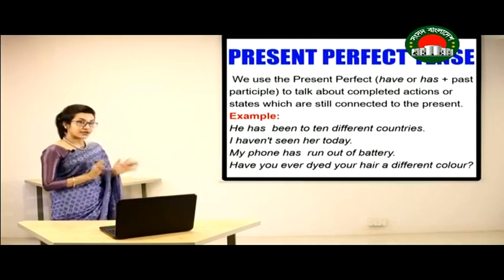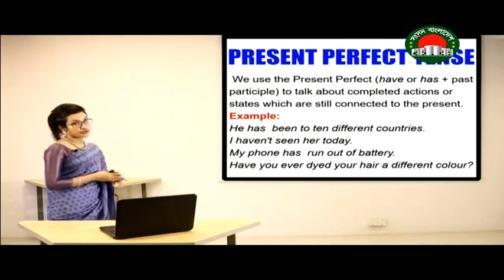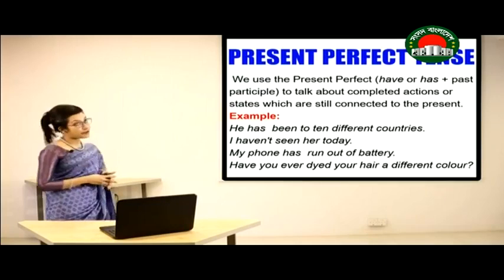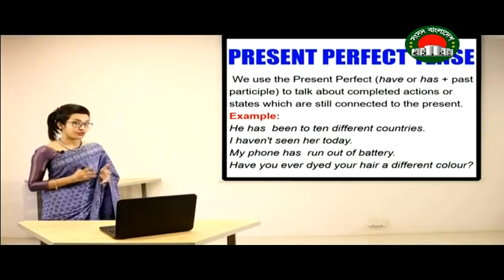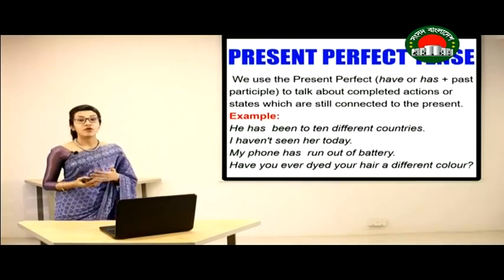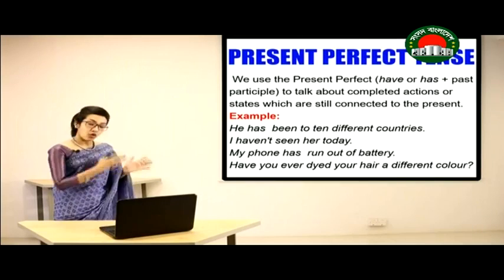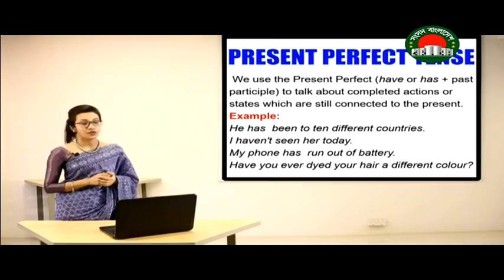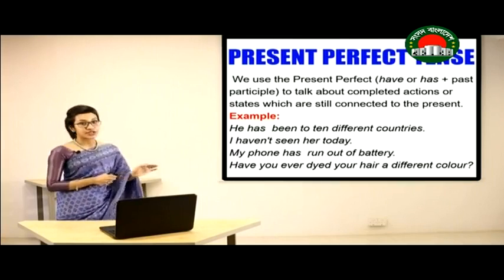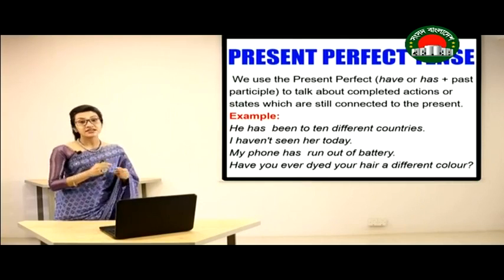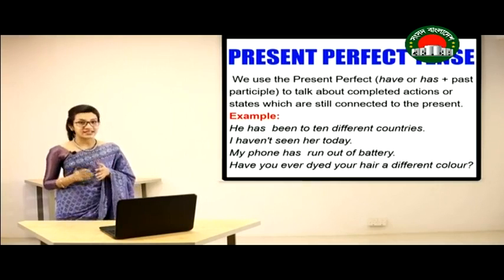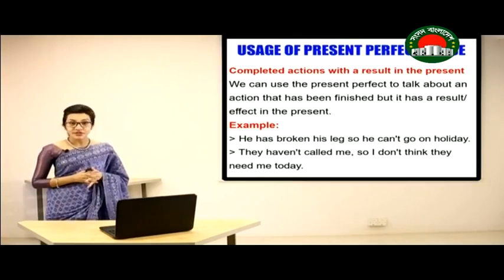In all these examples, we use the subject first, then have or has as the auxiliary verb, then the past participle form of the verb. In all these actions, there is something in common: the actions, events, and effects are still present at the moment and still connected.